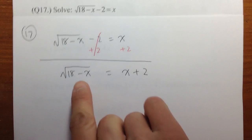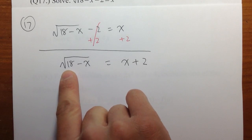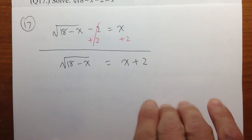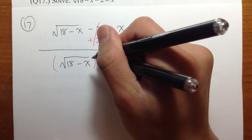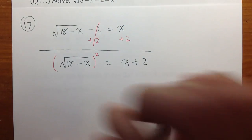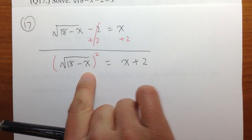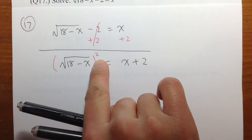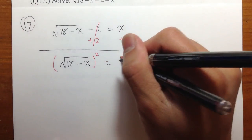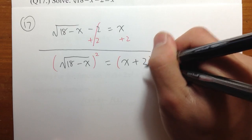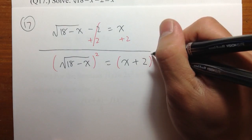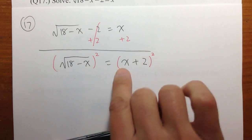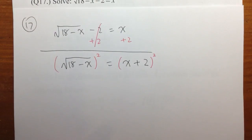Now, once the square root is isolated, what we can do is square both sides. So put a big parenthesis, square — raise this side to the second power. We will do the same on the right-hand side: put a big parenthesis, square the whole thing, raise this to the second power.